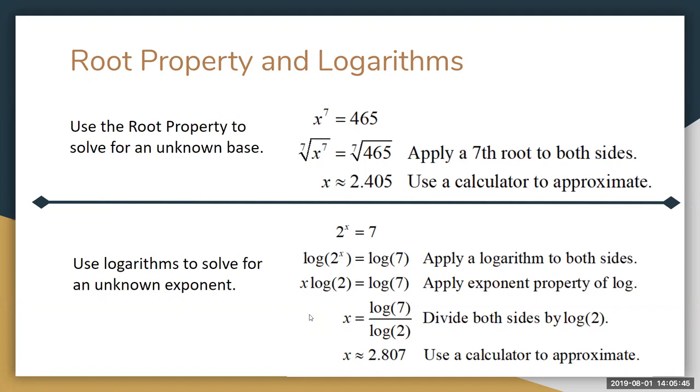So we're claiming that if you take the number 2 and you raise it to the power 2.807 you'll get approximately 7 as a result.